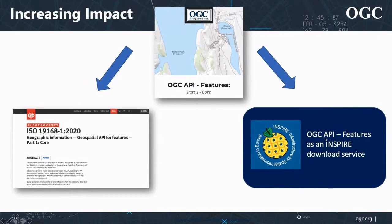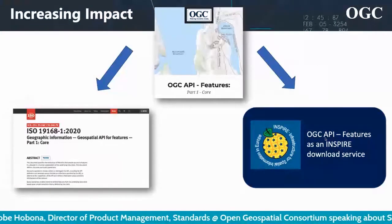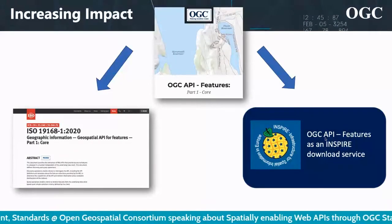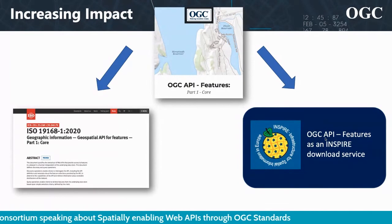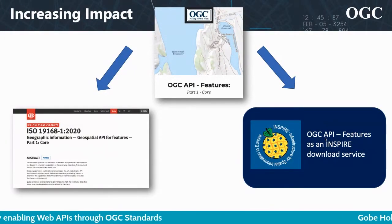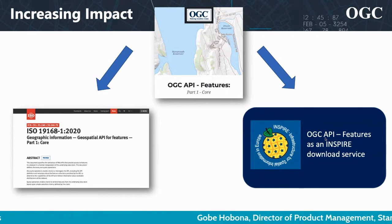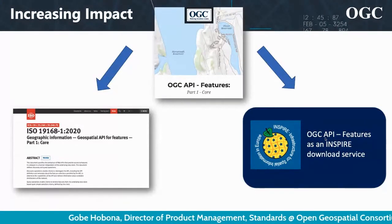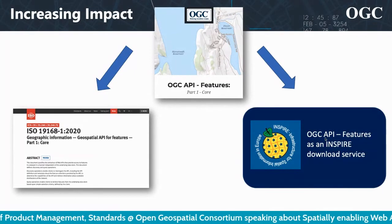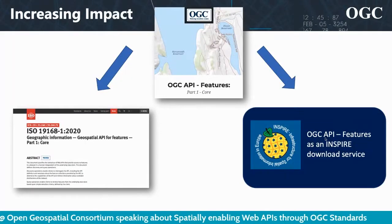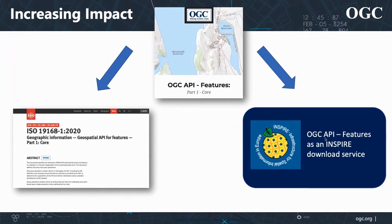We are already seeing significant impact of OGC APIs across the globe. The International Organization for Standardization — also known as ISO — has approved OGC API Features under the name ISO 19168 Geospatial API for Features, expanding the reach of OGC API Features across industry. We also have the European Union's Inspire community, which has endorsed OGC API Features as a good practice for the Inspire download service. The Inspire directive enables the sharing of spatial data across the European Union.